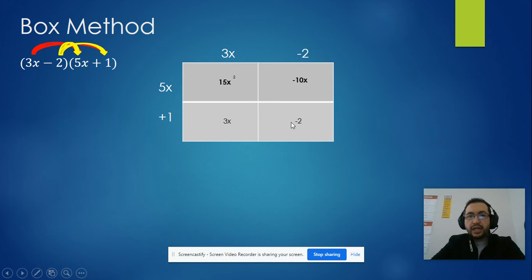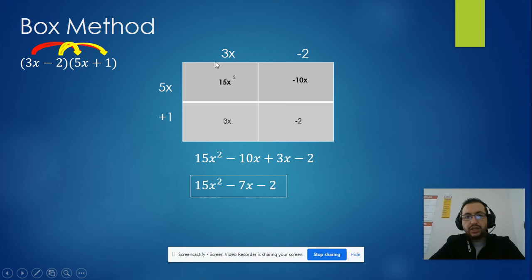And then we're going to just add whatever we have inside. So 15x squared minus 10x plus 3x minus 2. Combine like terms, 15x squared minus 7x minus 2. That's how we're going to do it if we get a binomial or trinomials times a binomial. Just get a box and multiply and then simplify.